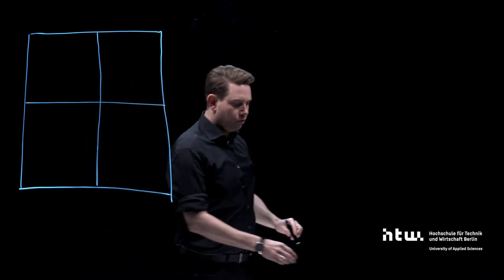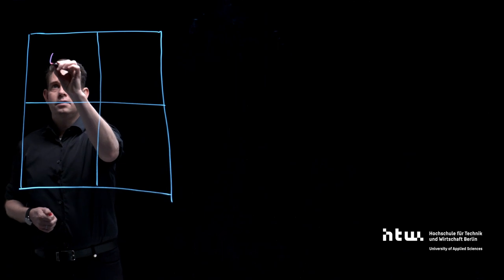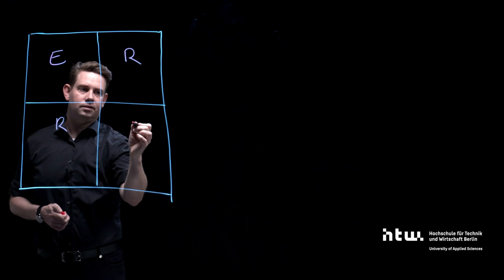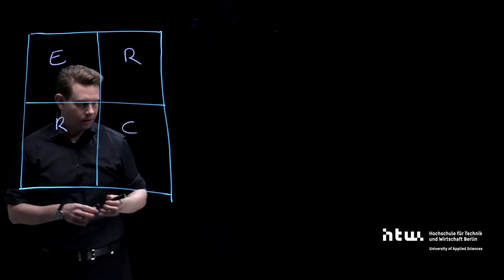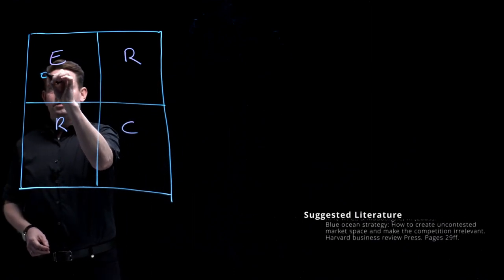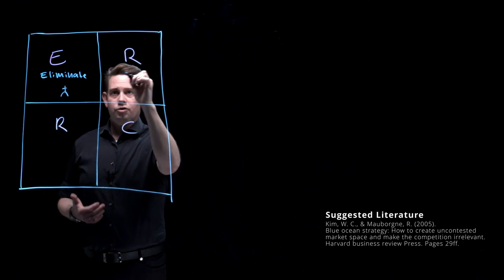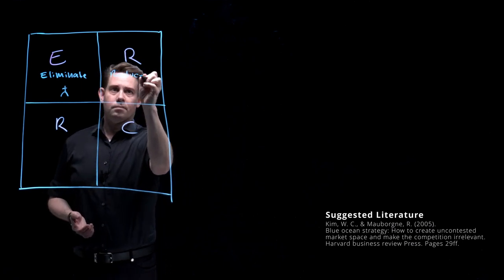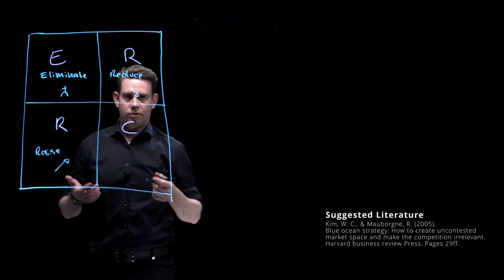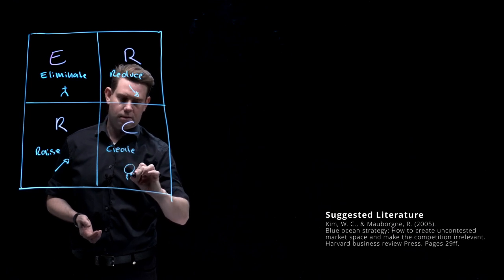So we have these four windows and the first one is E, second R, R, C, which basically means to eliminate or to reduce, to raise or to entirely create.